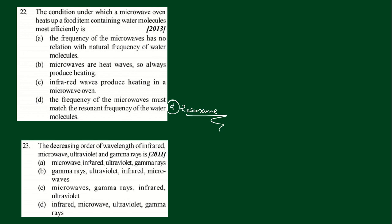Question number 23: the decreasing order of wavelength of infrared, microwave, ultraviolet and gamma rays. The decreasing order would be microwave, then infrared. Here is the answer.